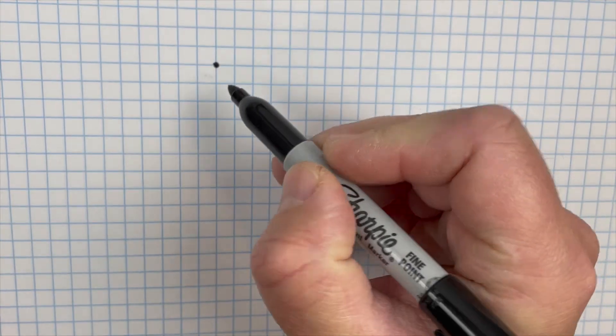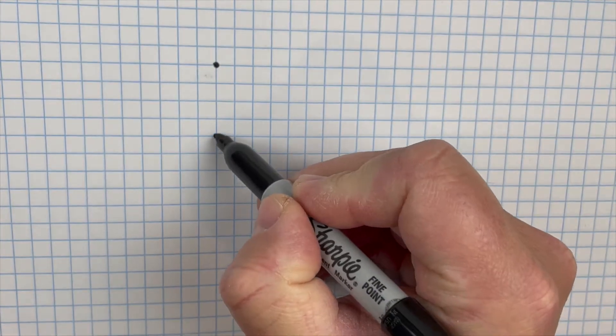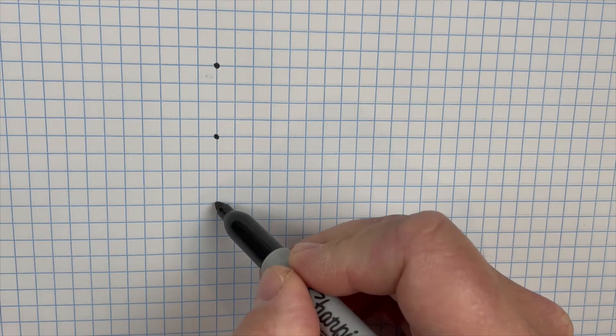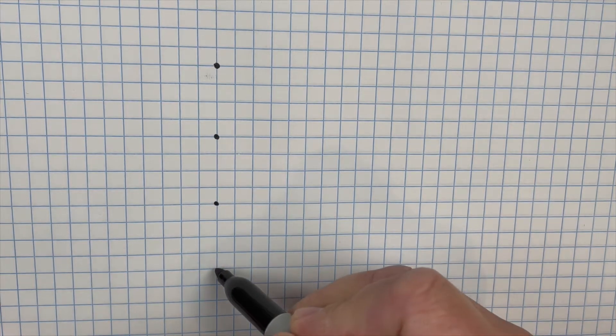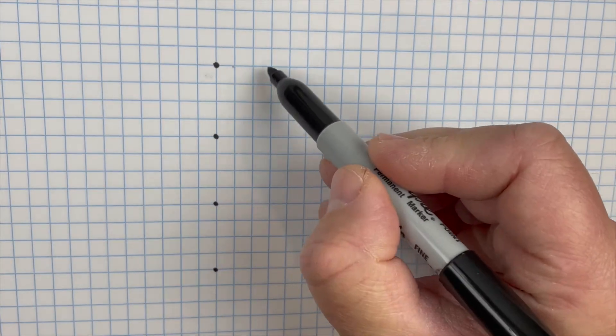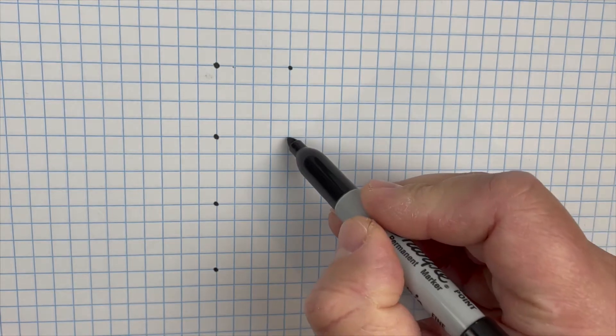Alright guys, today we are drawing the Celtic knot. How is this possible? I'm gonna do it on graph paper to make it so easy for you. Get a piece of graph paper, get a marker, sharpie, or any other kind.